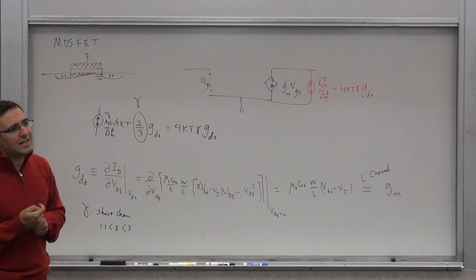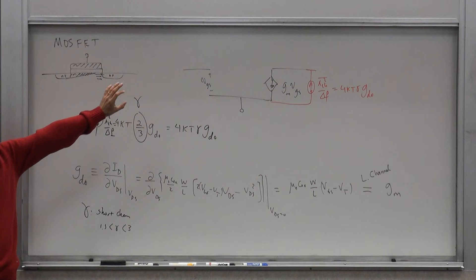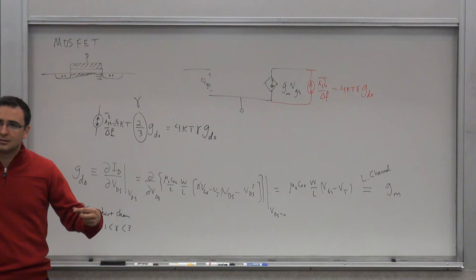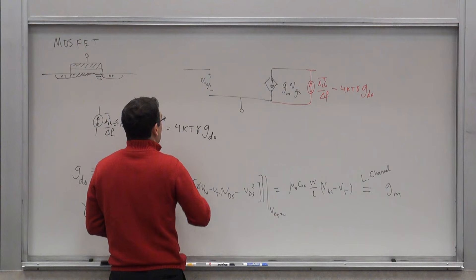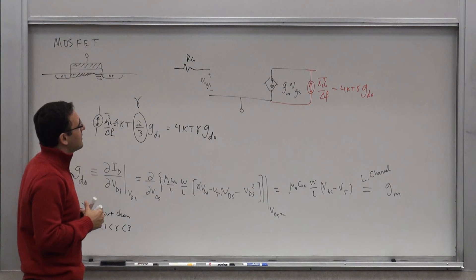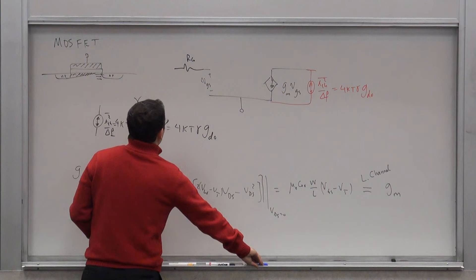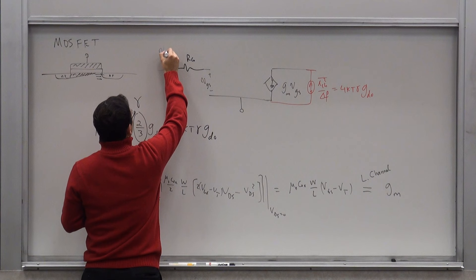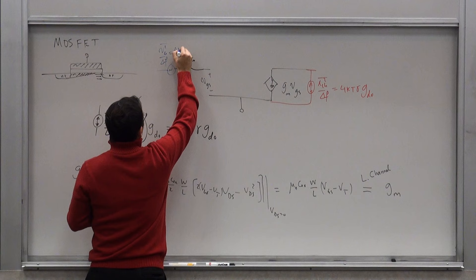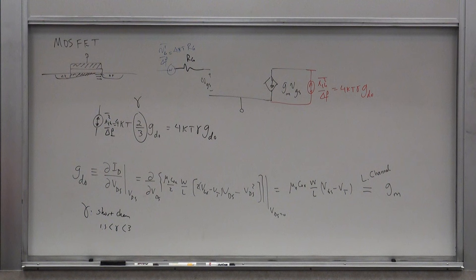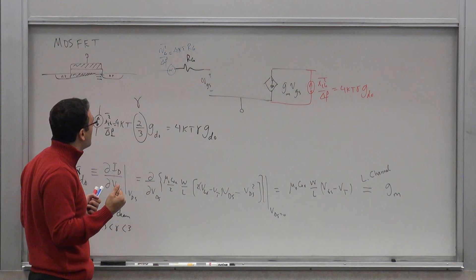What other physical resistances matter in a MOSFET? Drain and source are N⁺ — pretty low resistance. But your gate is made long and thin, similar to the base in a BJT, so the gate resistance R_g can be important. At low frequencies for gain purposes, R_g doesn't matter because the gate input impedance is infinite. But for noise, R_g contributes thermal noise: V_g²/Δf = 4kT·R_g.